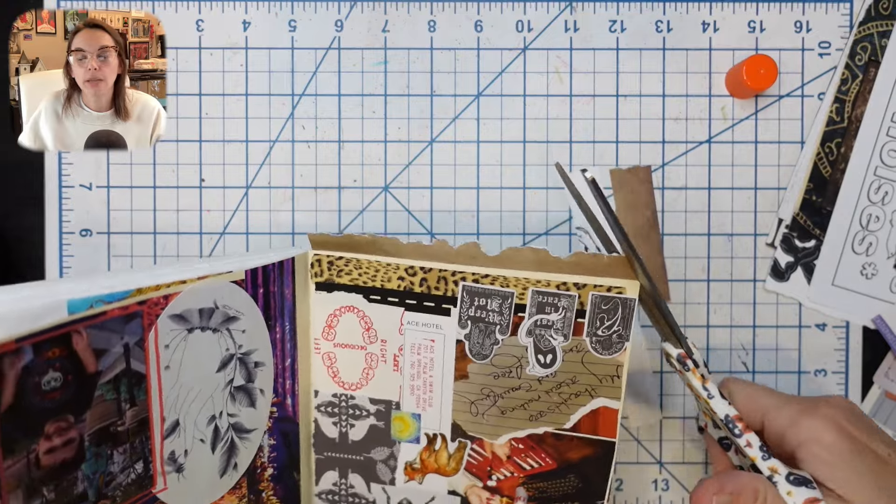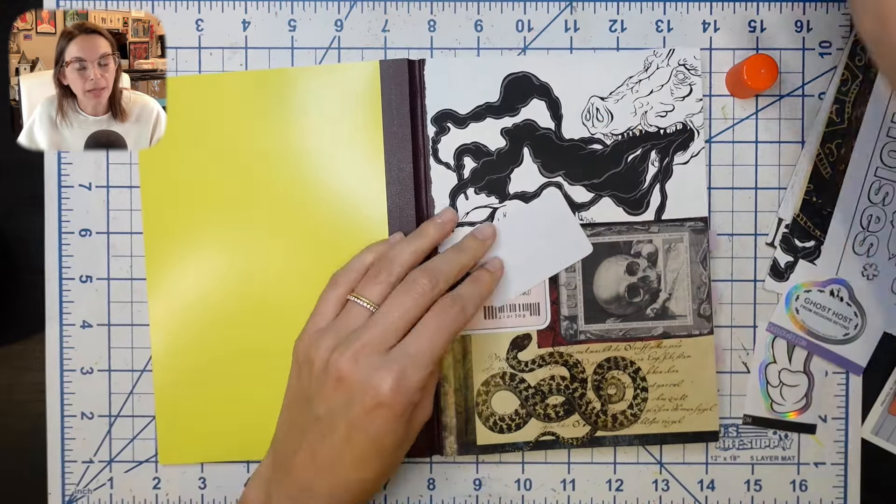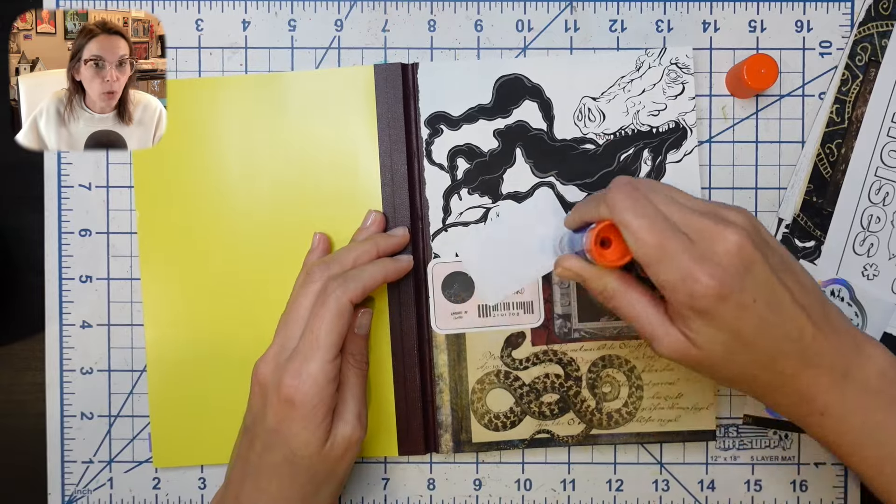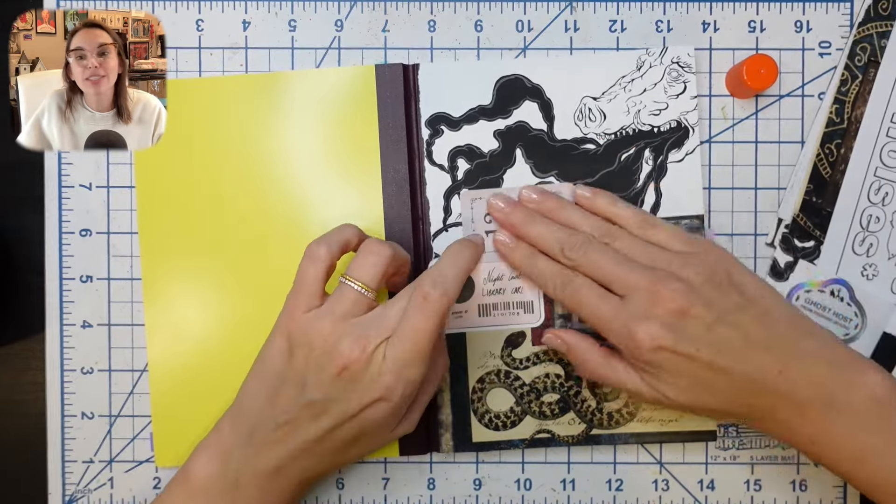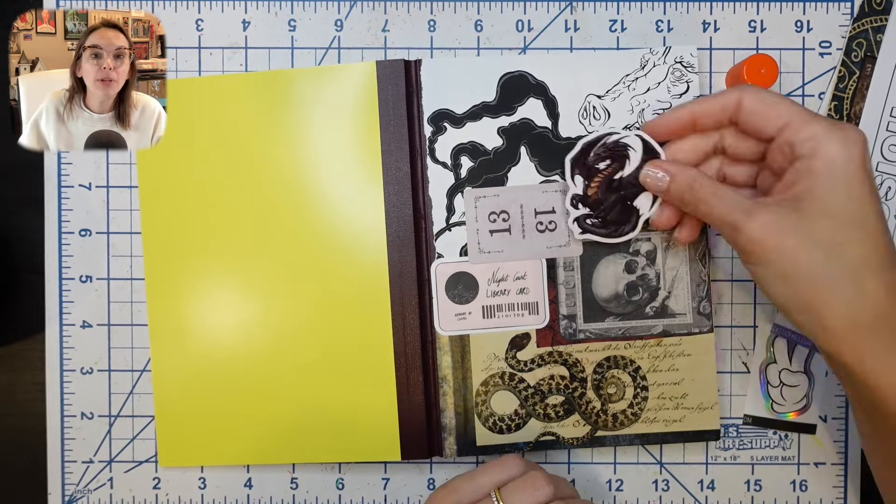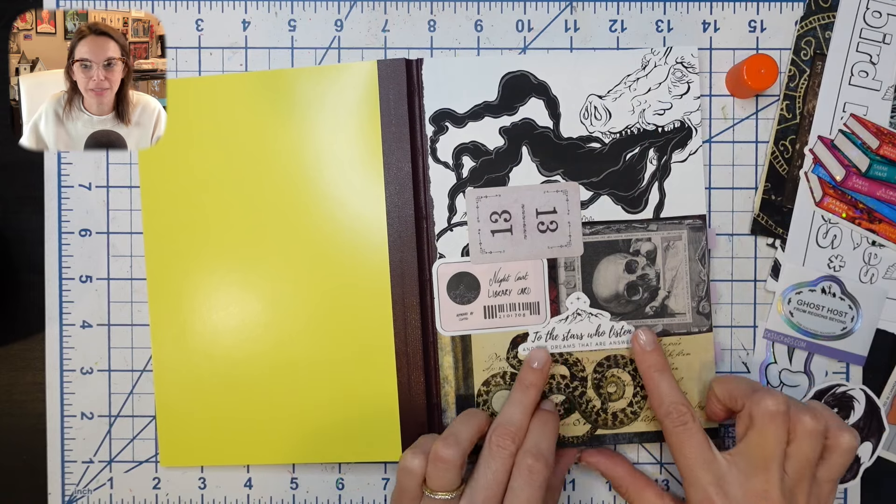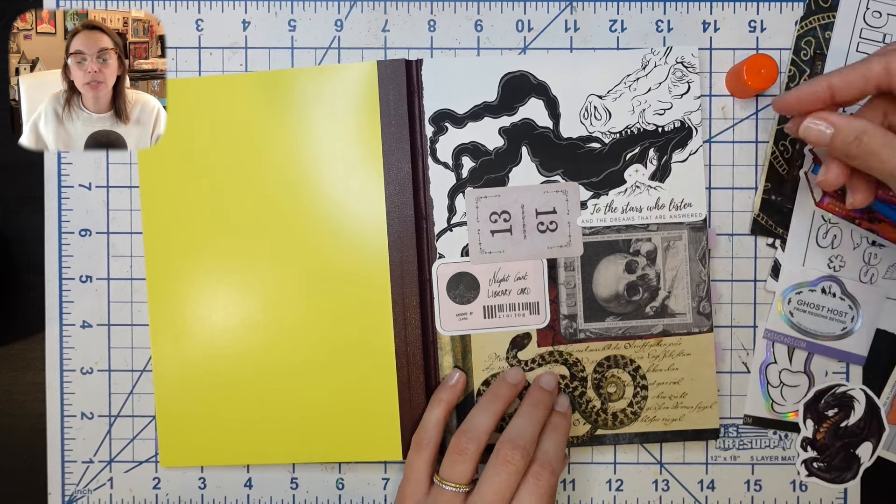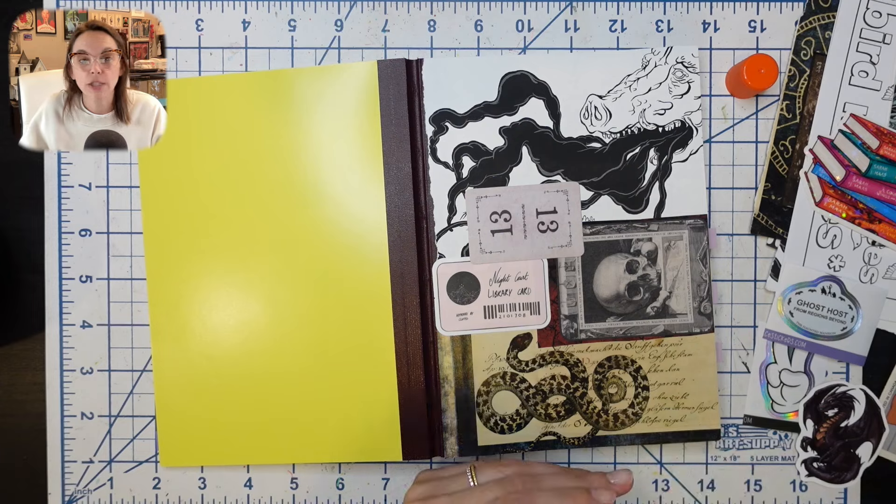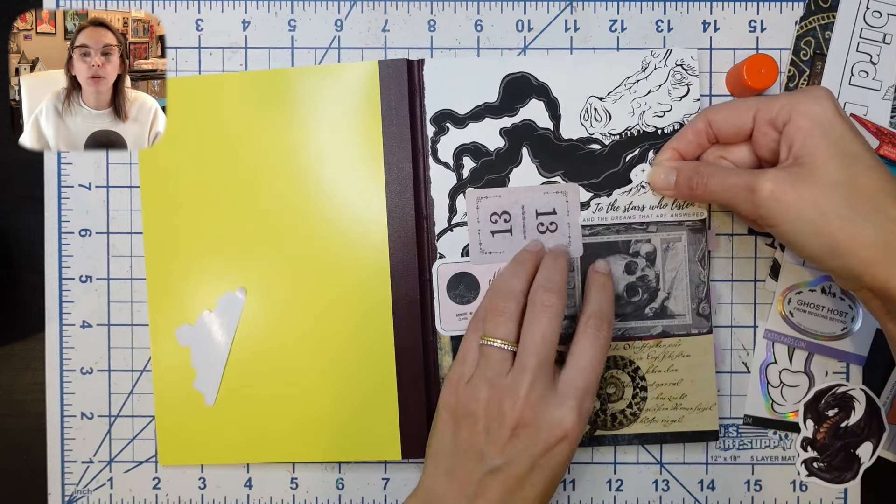I call my Hobonichi my planner journal, by the way, in case you're new here and you are unfamiliar with what this is. It is my planner, but it is also my personal journal. It acts like a junk journal a lot of times where I will just throw in random receipts or photos or things from the week.